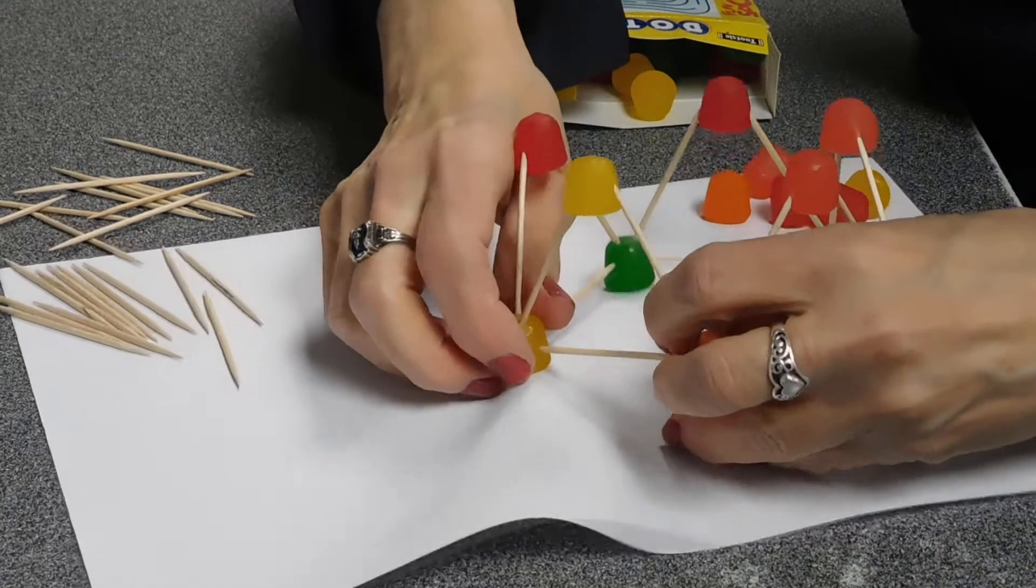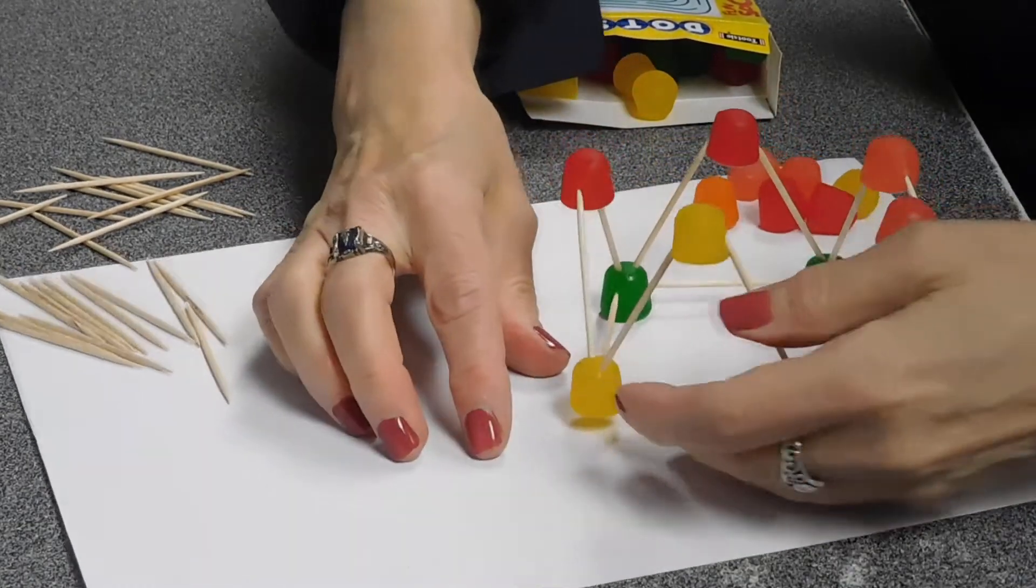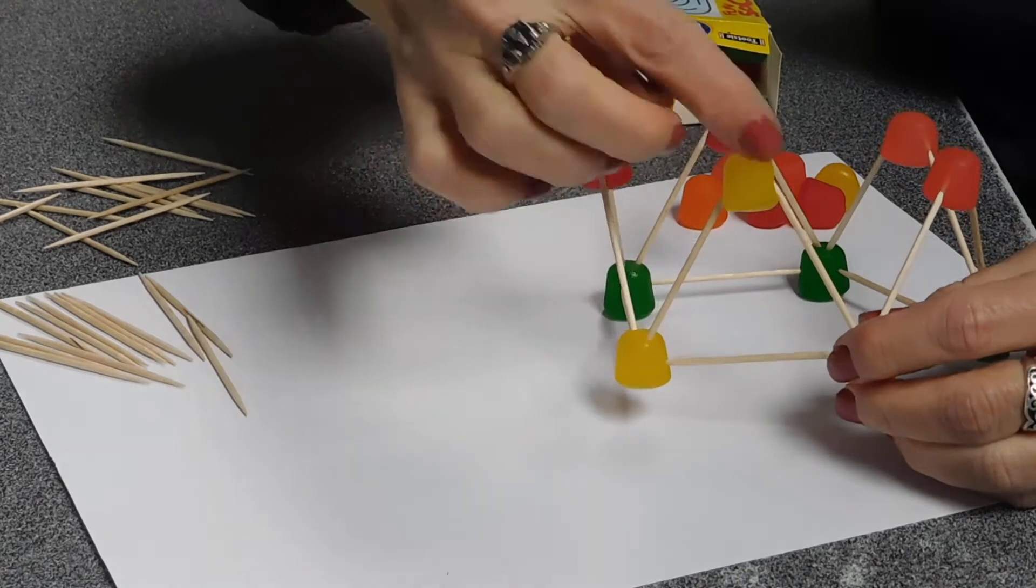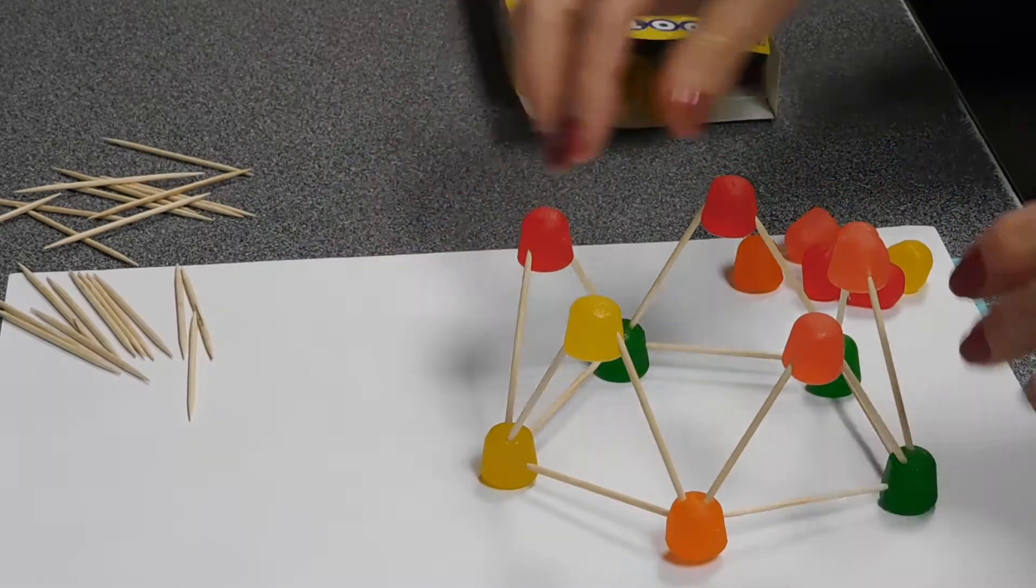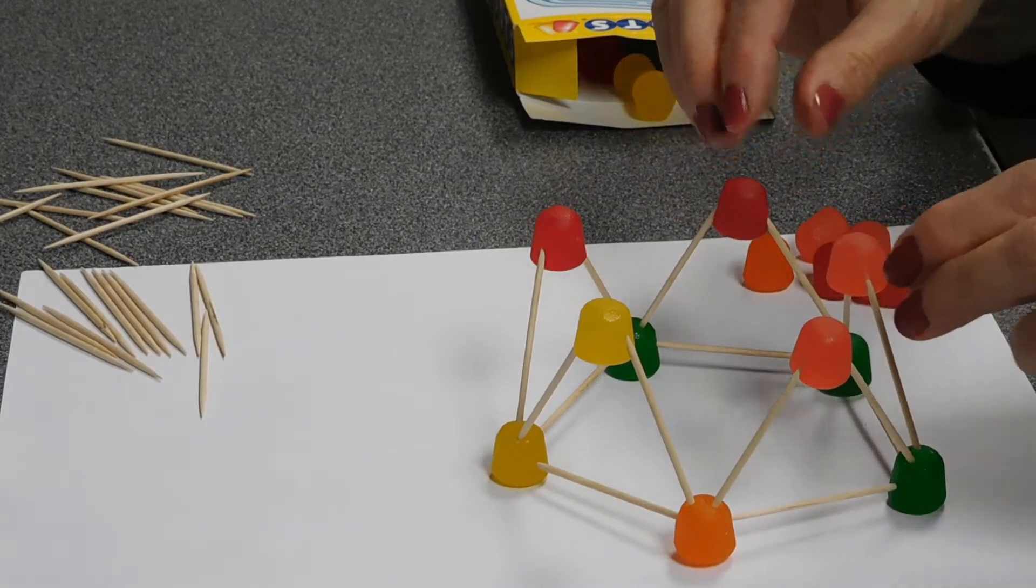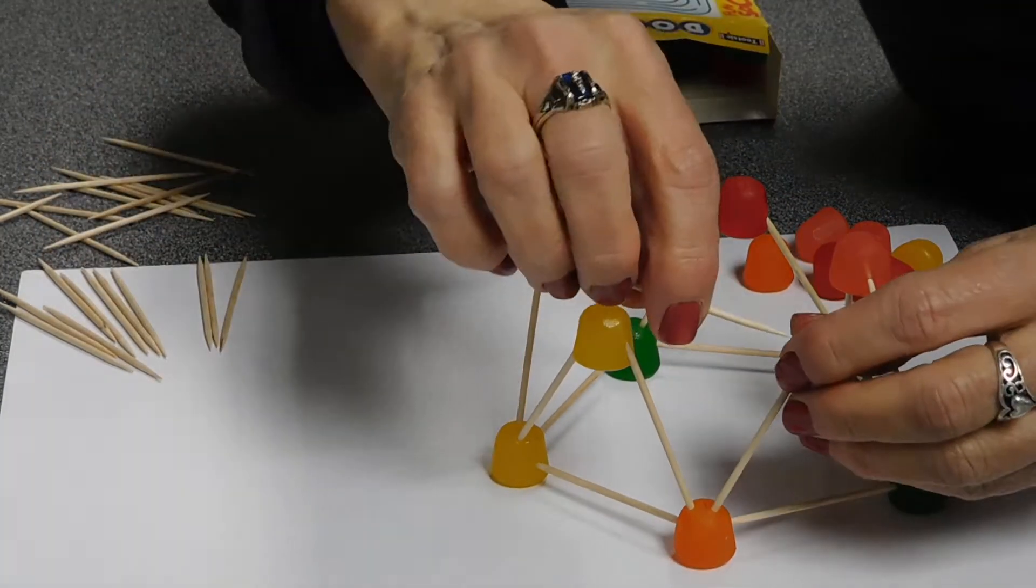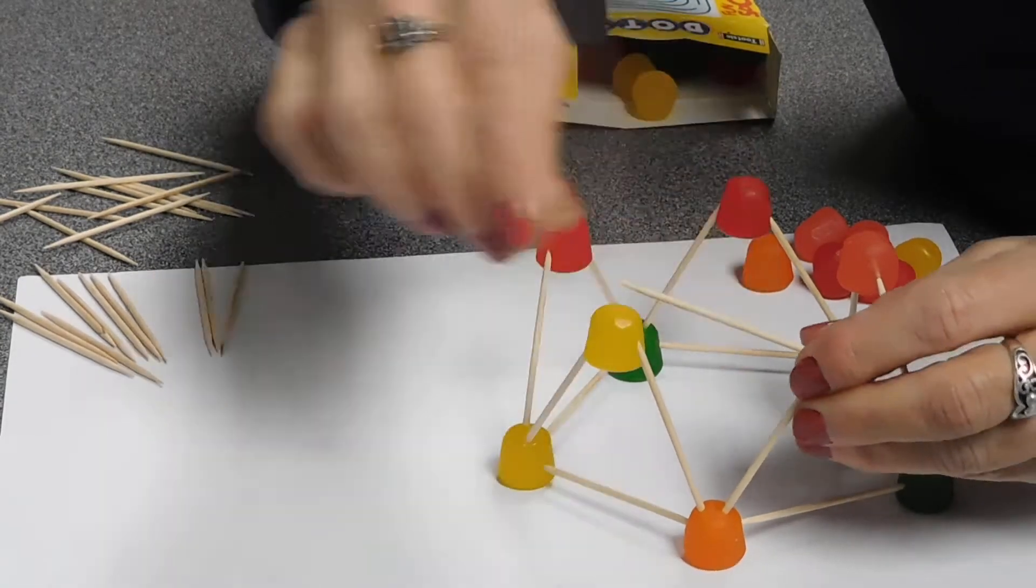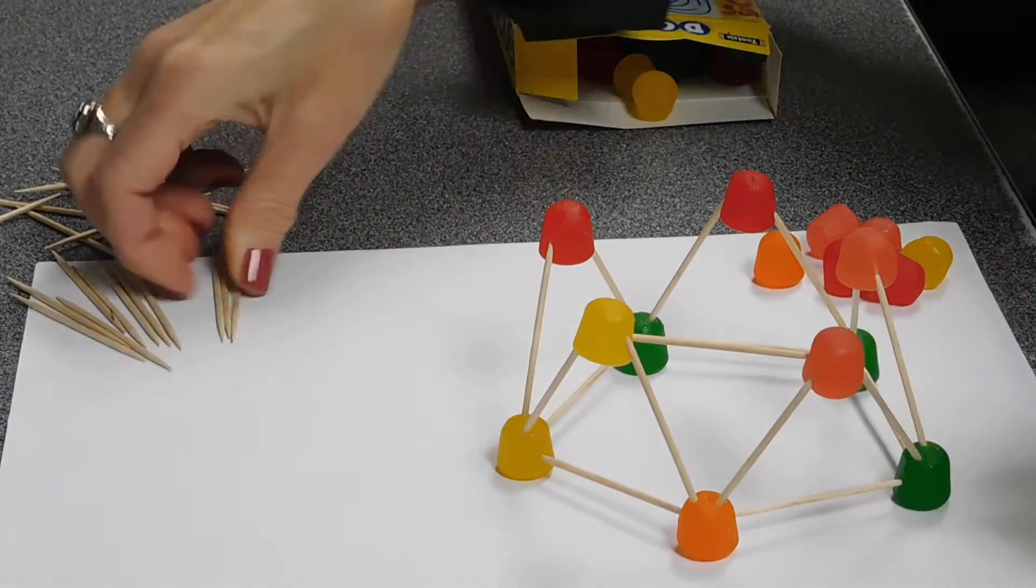So let's just take a second and look at what we do have here. So I'm not sure how great you can see this, but we kind of really just have five triangles standing upwards.